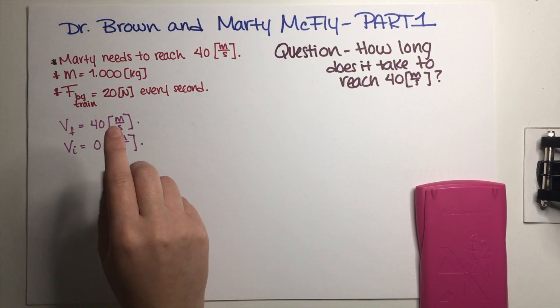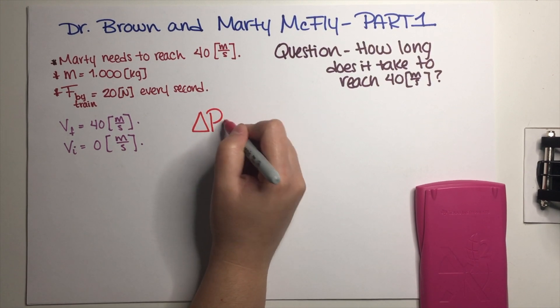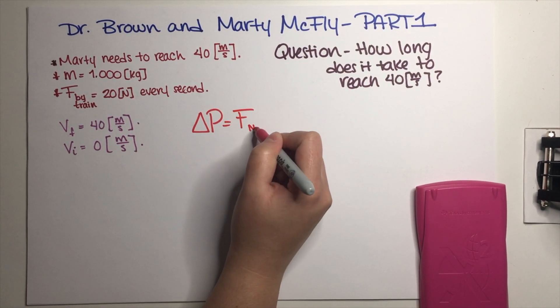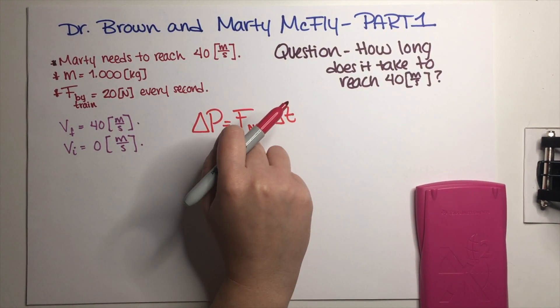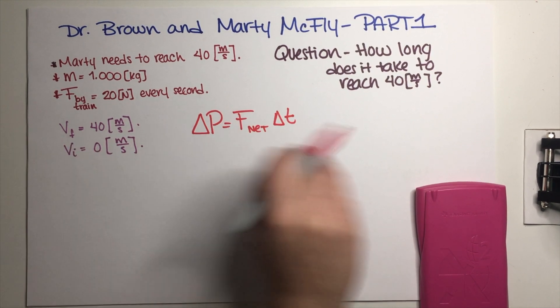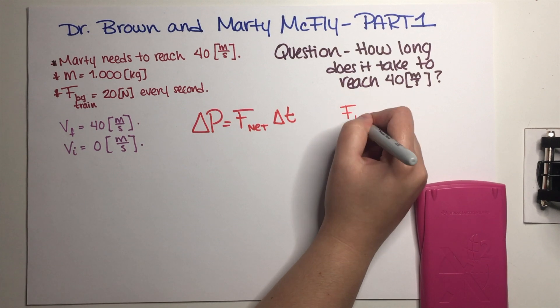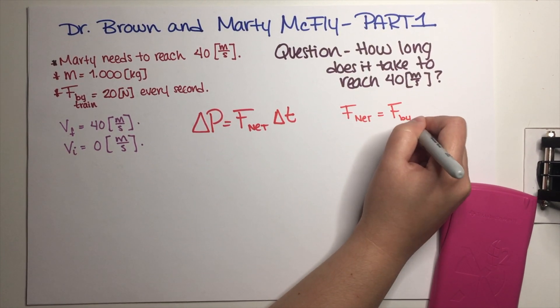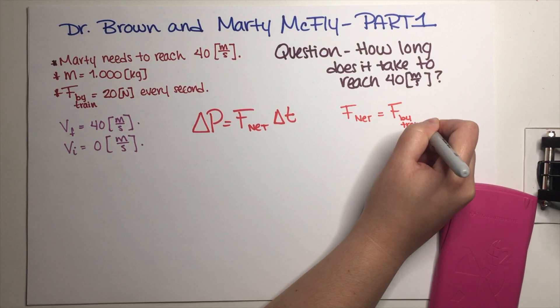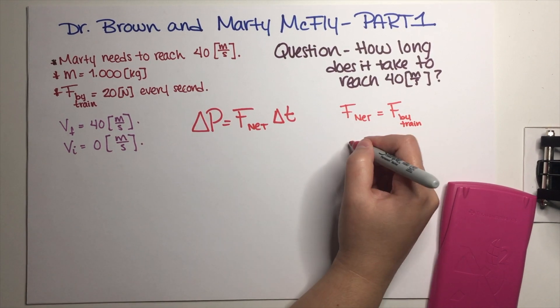This is a very straightforward problem. The only thing that we have to do is remember our equation: ΔP = F_net × Δt. In this particular case, the only force that the car is feeling in the x direction will be force by train, so our net force is just the force by the train. And ΔP by definition is just mass times Δv.